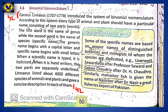The next topic is Binomial Nomenclature. Linnaeus lived from 1707 to 1778. According to this system, every type of animal and plant should have a particular name consisting of two parts. The first word is the name of the genus, while the second word is the name of the species. The generic name begins with a capital letter and the specific name begins with a small letter. When a scientific name is typed it is italicized; when handwritten, the two parts are separately underlined. Linnaeus listed about four thousand different species of animals and plants and gave a concise description to each.